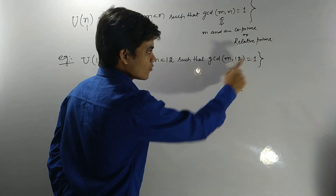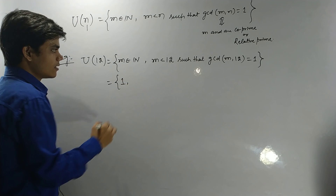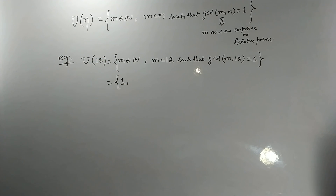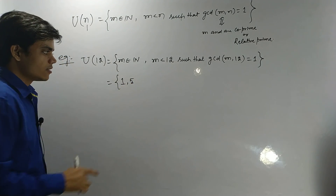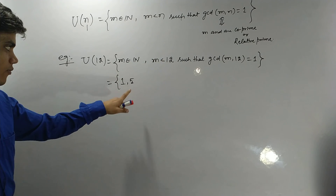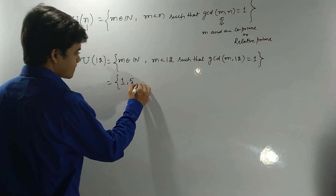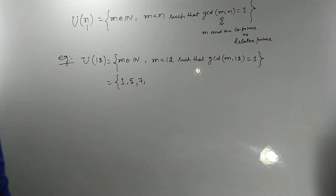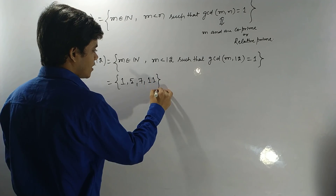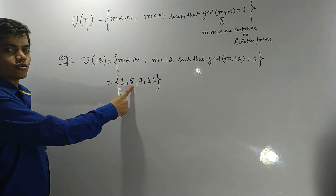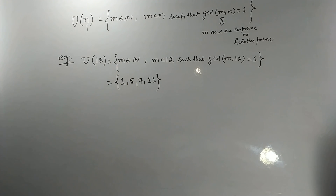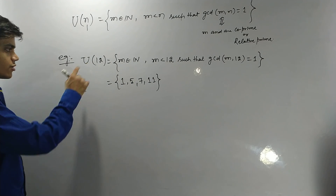Starting from 1: GCD(1, 12) = 1, so yes. GCD(2, 12) = 2, no. GCD(3, 12) ≠ 1, no. GCD(4, 12) ≠ 1, no. GCD(5, 12) = 1, yes. 6 is not, 7 yes, 8 no, 9 no, 10 no, 11 yes, and 12 is not. Therefore U(12) = {1, 5, 7, 11}.